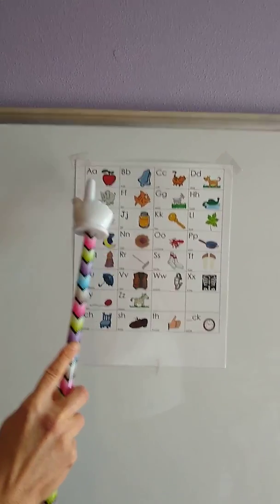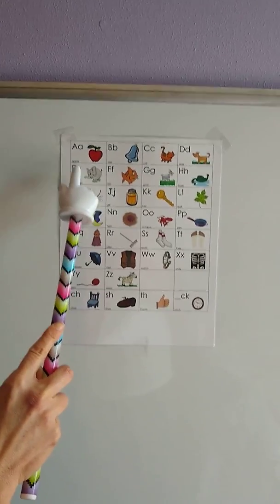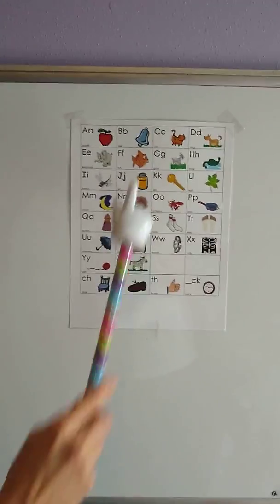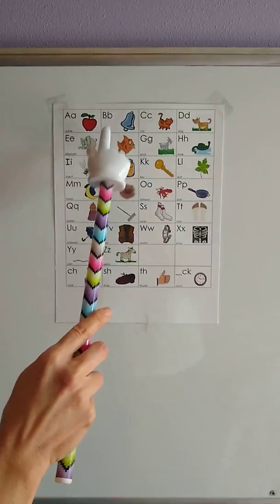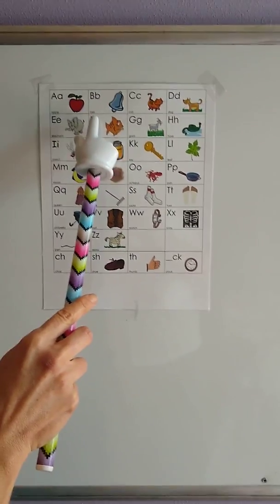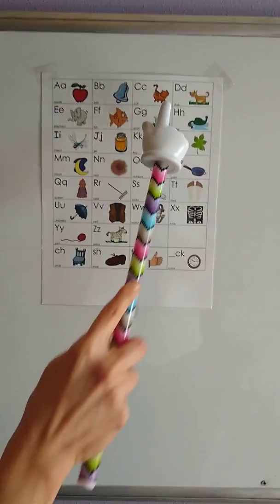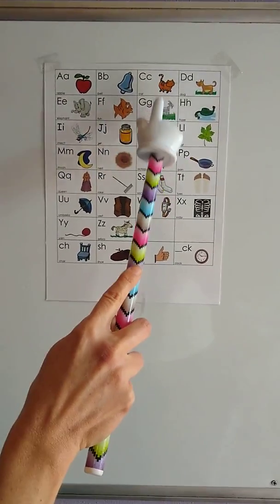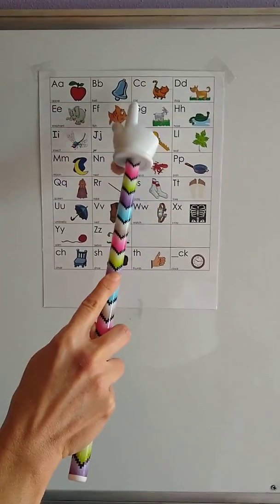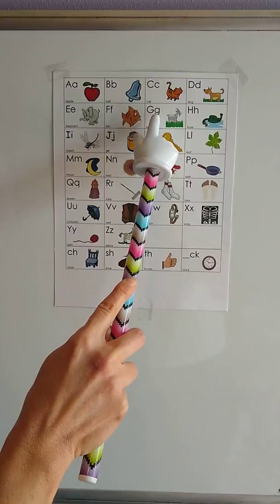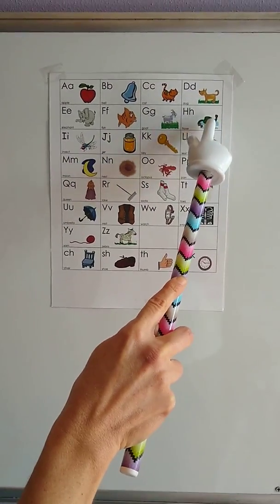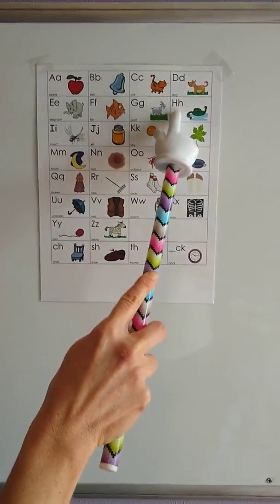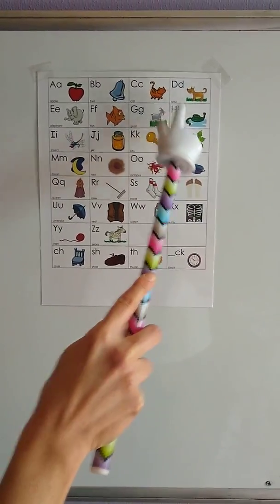Elephant, elephant, eh, eh, eh. Fish, fish, ff, ff, ff. Goat, goat, g, g, g. Hose, hose, h, h, h.